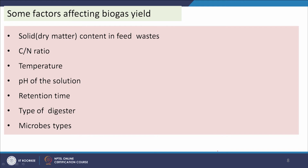Factors influencing anaerobic digestion performance include: solid or dry matter content in the feed wastes; C/N ratio (25 to 30, as discussed previously); temperature, which is important for microbial growth; pH of the solution, since microbes are pH-sensitive; and retention time required for degradation. The type of digester — single-step or two-step — also influences performance.